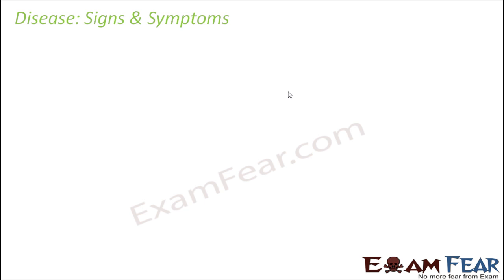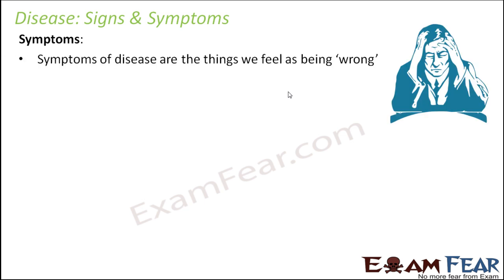When we talk about disease, we talk about the signs and symptoms. How do we know that a particular person is suffering from a specific disease — like malaria, typhoid, or cholera? We identify it based on symptoms. Symptoms are basically the things we feel as being wrong. For example, on a normal day you feel completely healthy, but one day you wake up feeling pain near your head. These kinds of things you feel as being wrong, which don't happen on a normal day, are the symptoms of a disease.